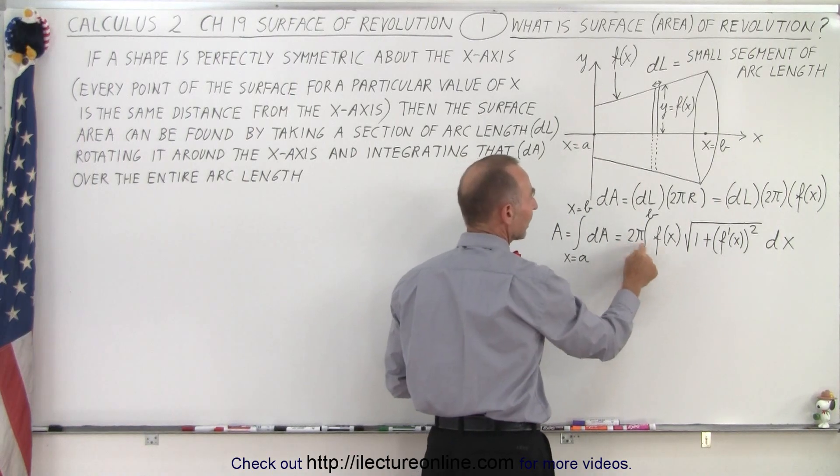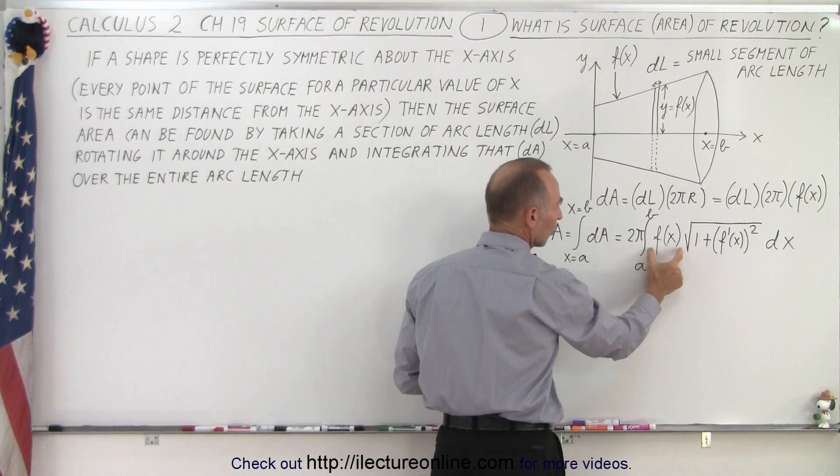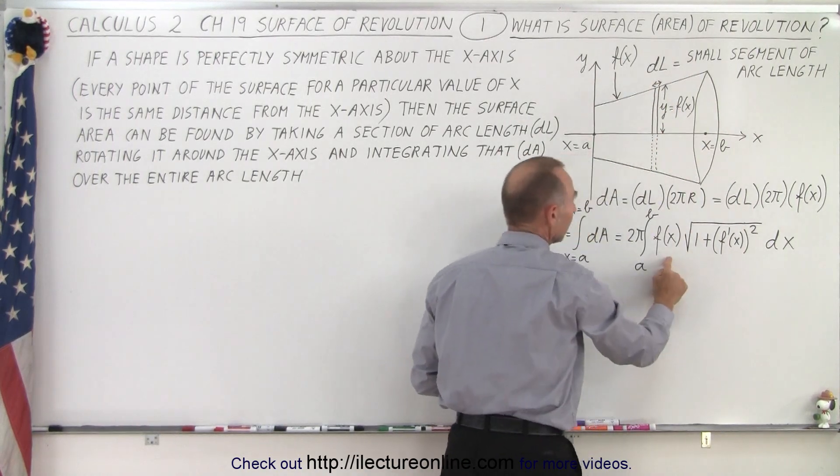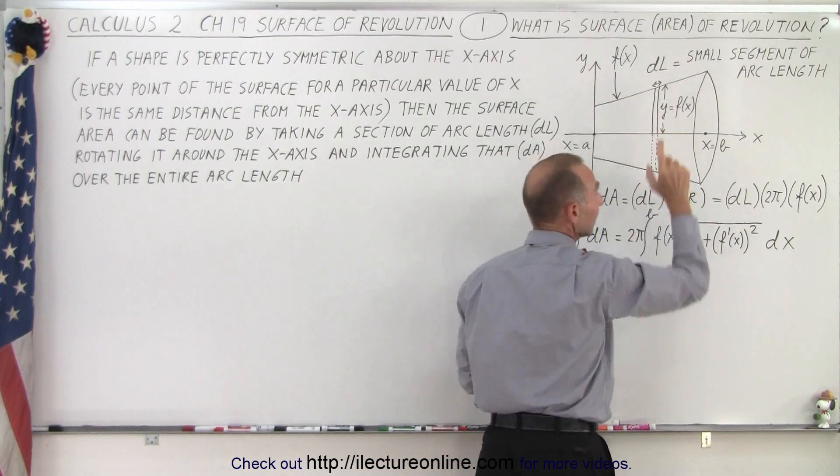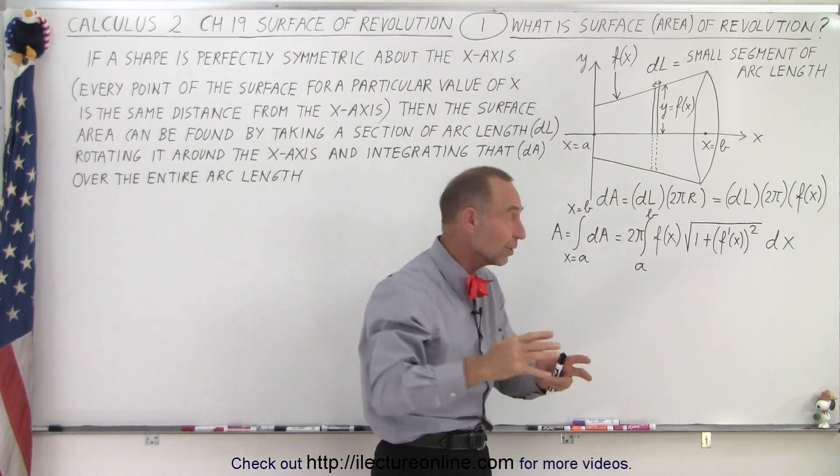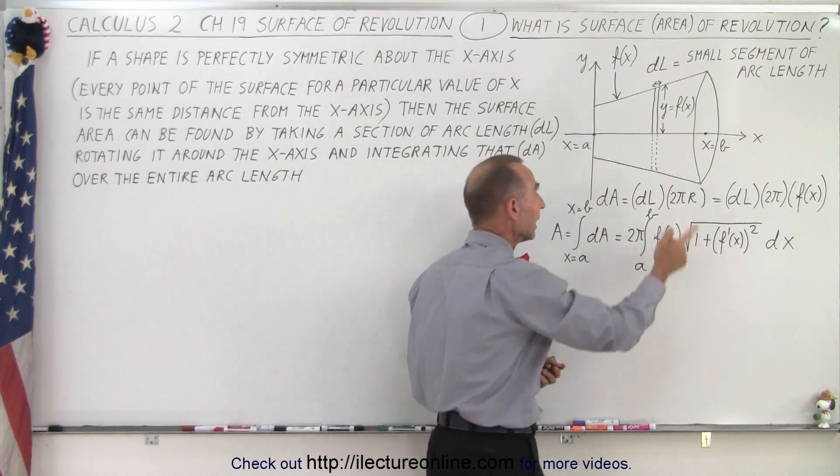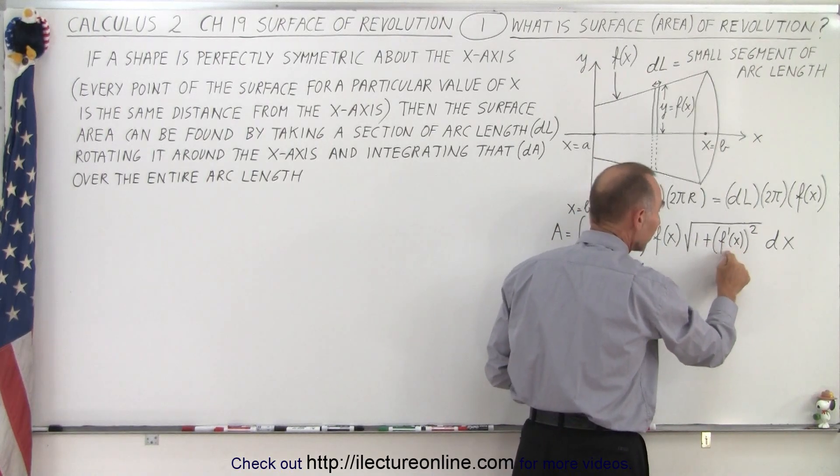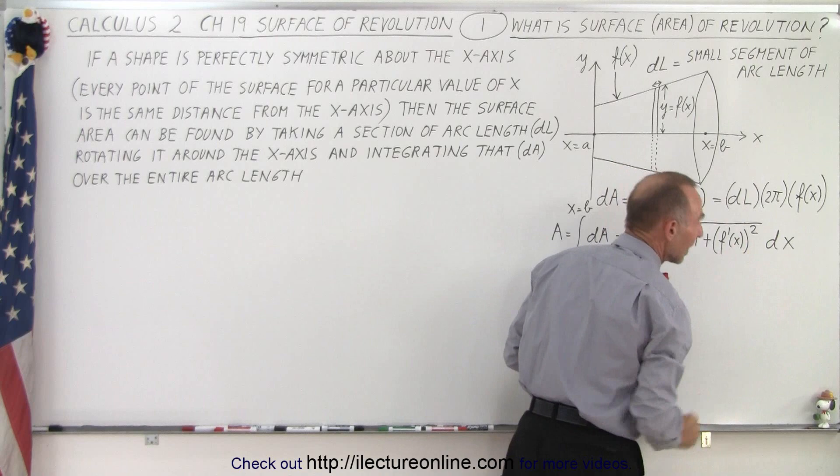We have 2π times the radius. The radius is going to be a function of x, a value of y that's going to change depending upon where we are, times the arc length. If you remember from the previous videos, the arc length can be found by integrating the square root of 1 plus the square of the derivative of the function times dx.